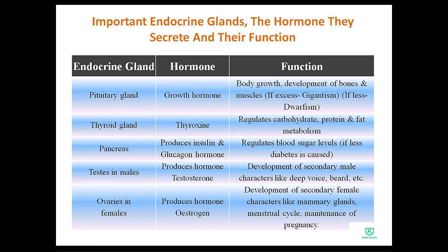The fourth endocrine gland is the testes in males. Their hormone is testosterone, which is called the male hormone. The function of testosterone is the development of secondary male characters like a deep voice, beard, and mustache.